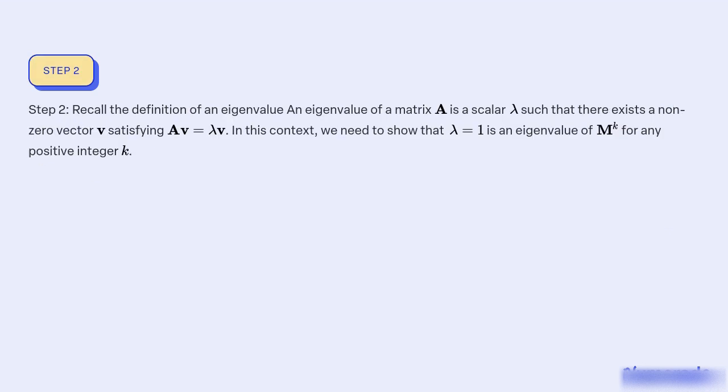Step 2: Recall the definition of an eigenvalue. An eigenvalue of a matrix A is a scalar λ such that there exists a non-zero vector v satisfying Av = λv. In this context, we need to show that λ = 1 is an eigenvalue of M^k for any positive integer k.